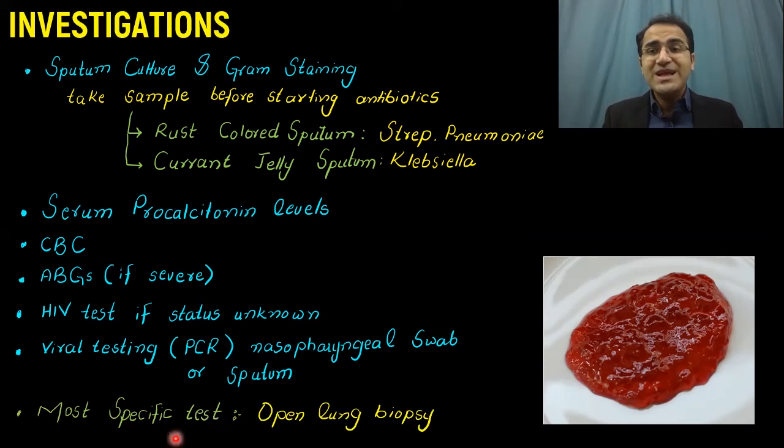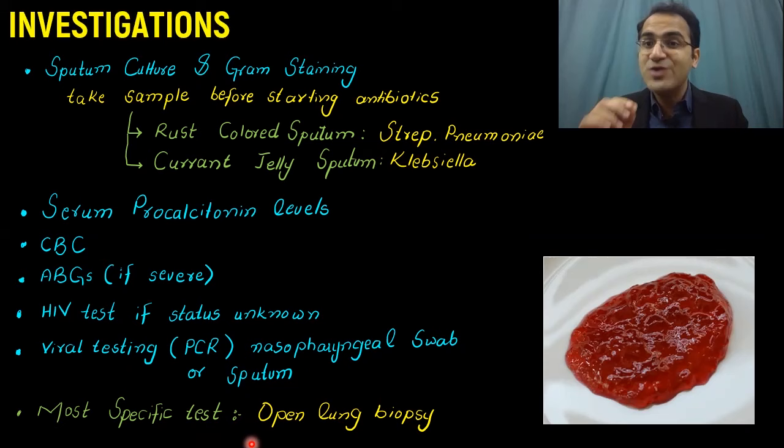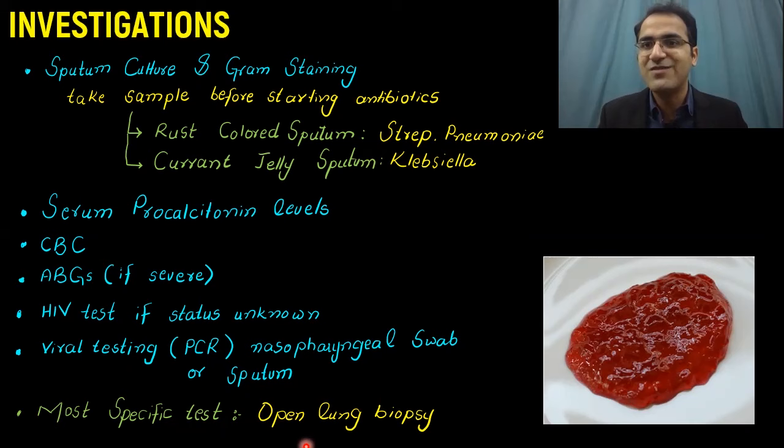If someone asks what the most specific test for pneumonia is — a test that is theoretically the most accurate but not routinely performed — that is open lung biopsy, where you open the lung, take a biopsy, and identify the infecting organism. This test is not done in practice, but technically it is the most specific test for pneumonia.